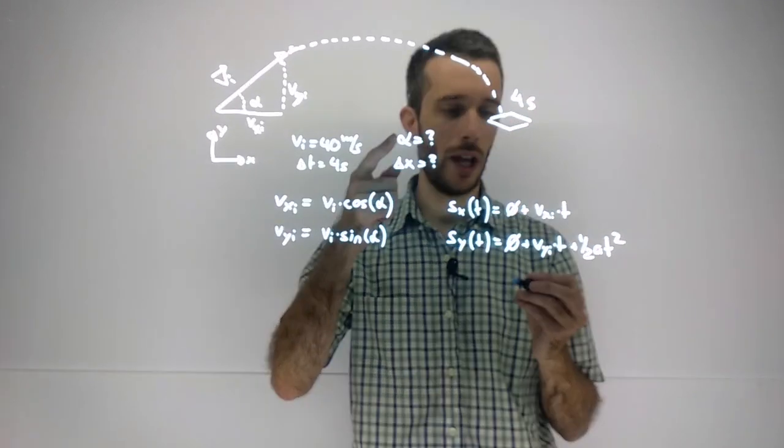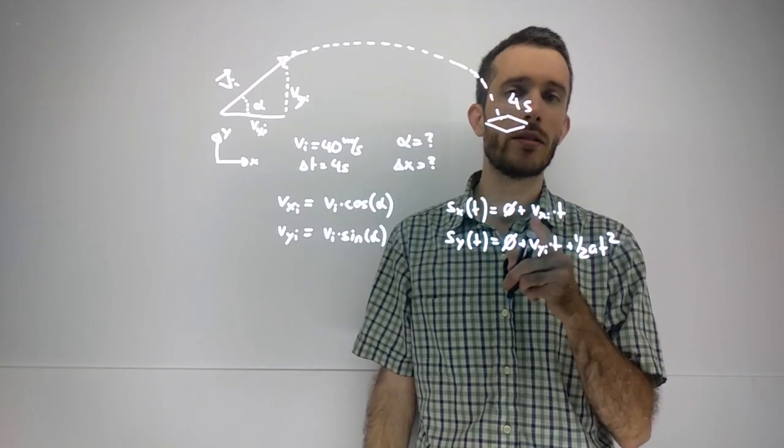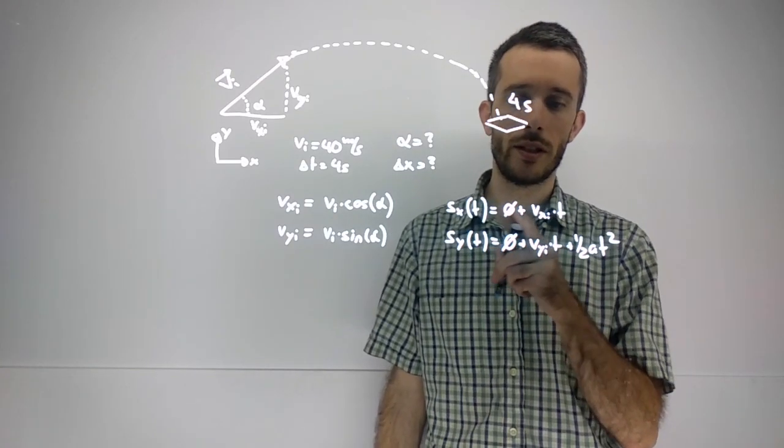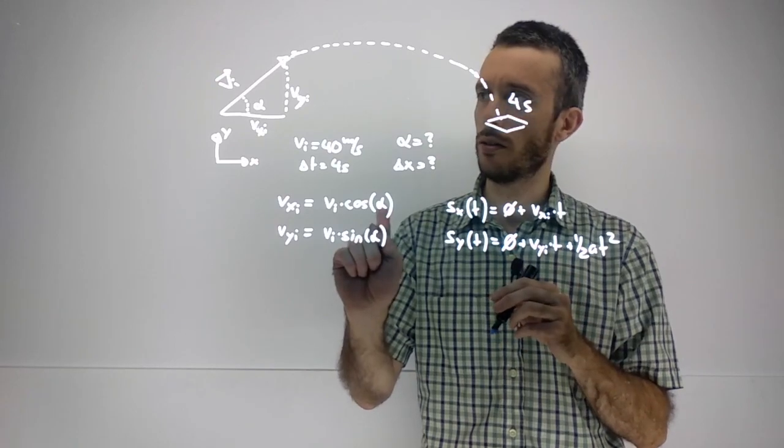Now, in my problem here, I'm looking for the angle and I'm looking for the delta x. The delta x, if I know my x component, I can easily find from this equation over here. The problem is, for this equation to be solved, I need to know the alpha.